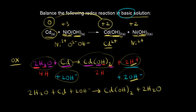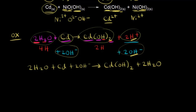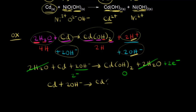Next we balance charge. On the left side, we have two hydroxides giving a charge of minus two. On the right side, the charge is zero. We add two electrons to the right side to balance the charge. We also cancel the two waters appearing on both sides. Our final oxidation half-reaction is: Cd + 2 OH⁻ → Cd(OH)₂ + 2e⁻. This is oxidation, so losing electrons makes sense.